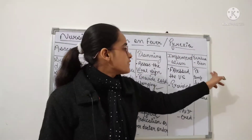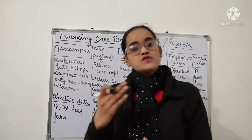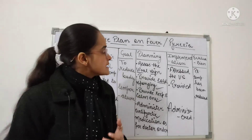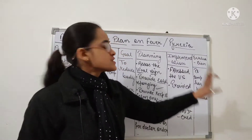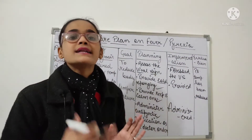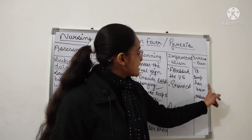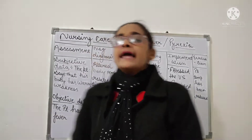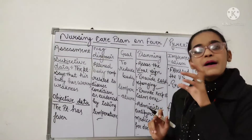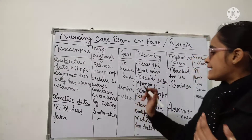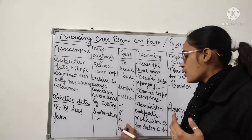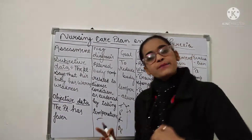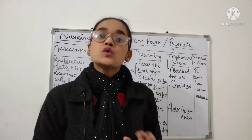Last step is evaluation. When we have done all the plans, we write the evaluation outcome. We will see whether the patient's fever has been reduced or not, and write that the patient's temperature has been reduced. Remember to record the actual vital sign readings — temperature, pulse, respiration, and blood pressure — so we know what the temperature was before and after.